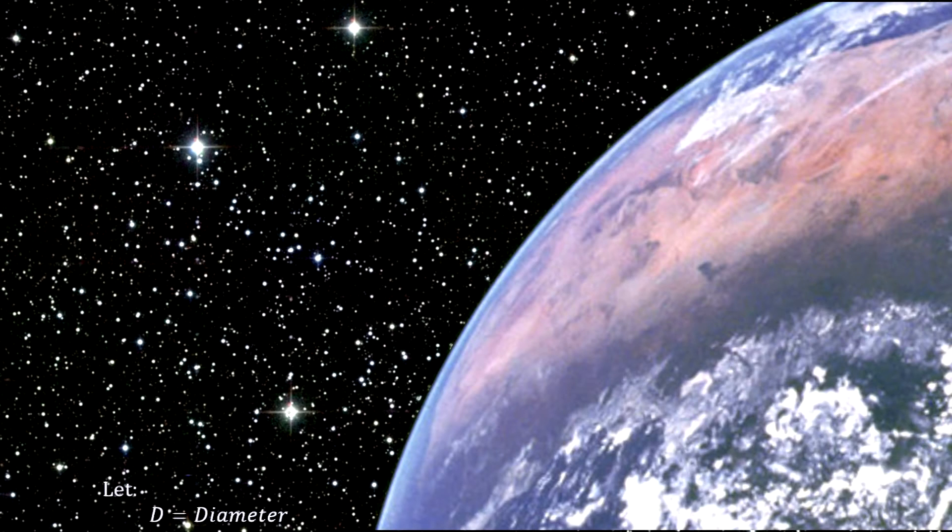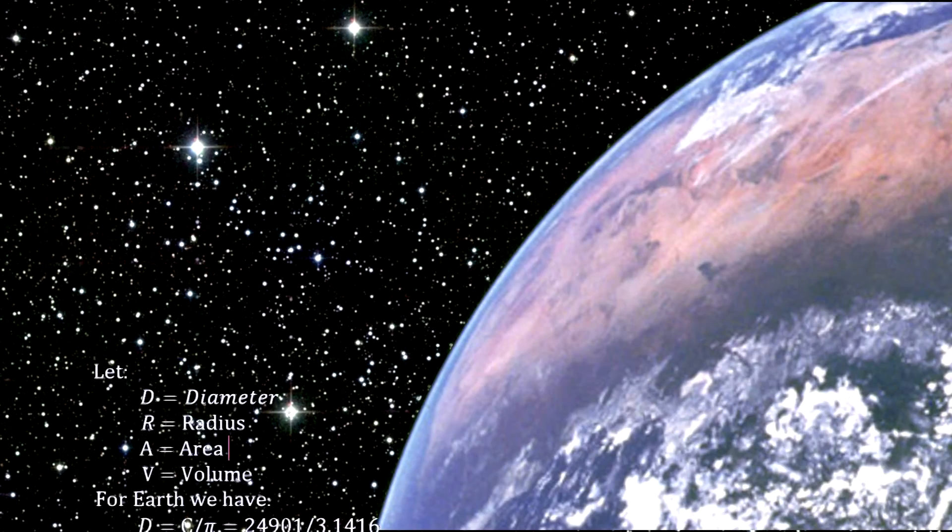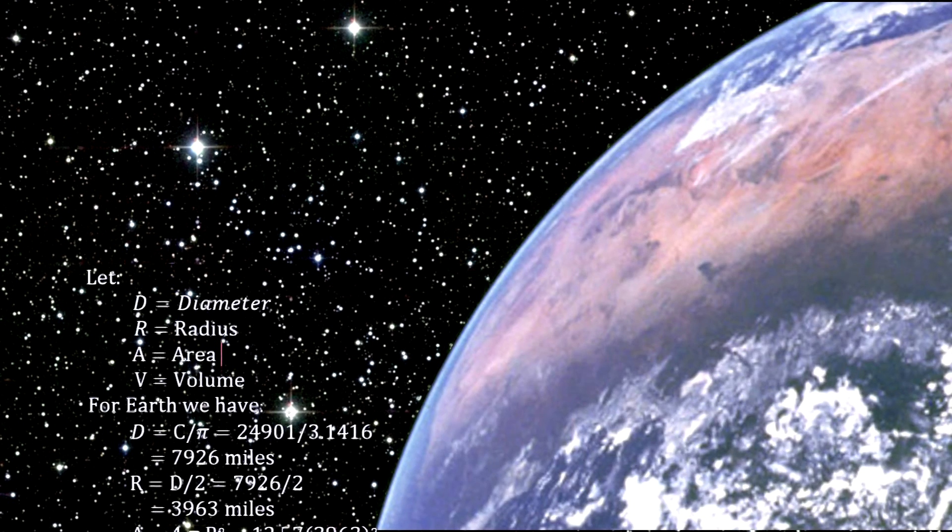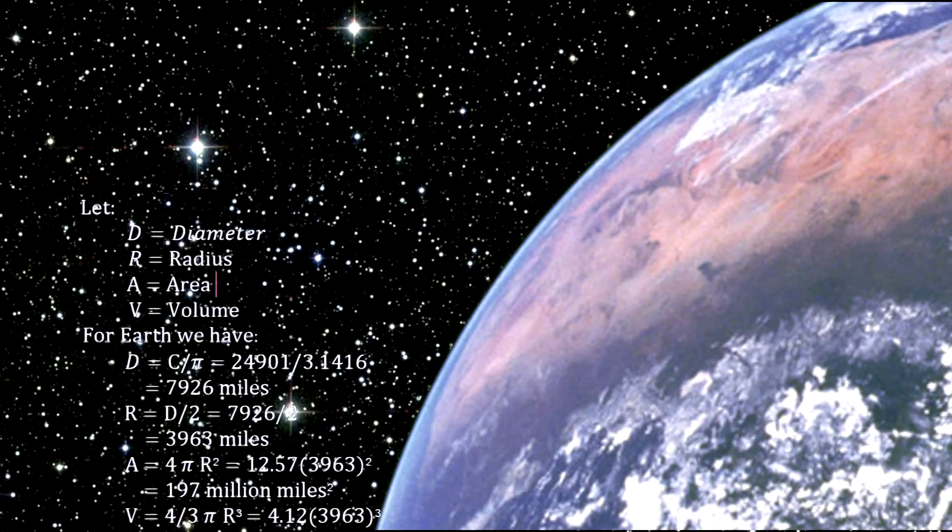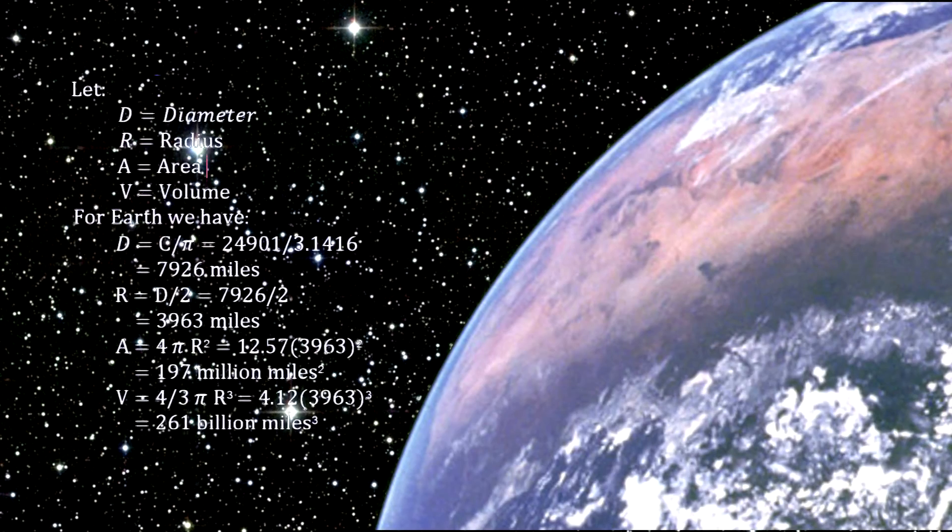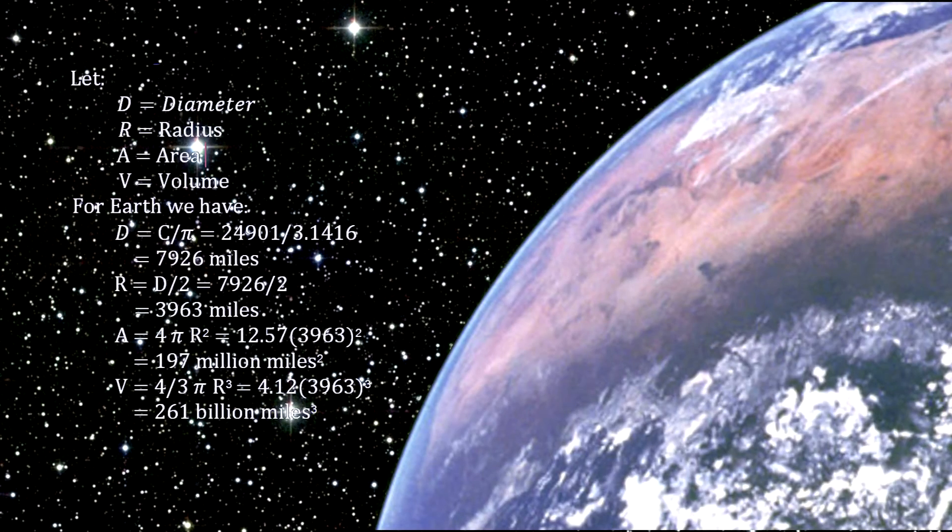Once we have the circumference, geometry gives us the rest. For a spherical Earth, the diameter is equal to the circumference divided by pi. That's 7,926 miles. The radius is half the diameter, so it's 3,963 miles. The surface area is 4 times the radius squared times pi. That's 196 million square miles. And the volume is 4/3 the radius cubed times pi. That's 260 billion cubic miles.